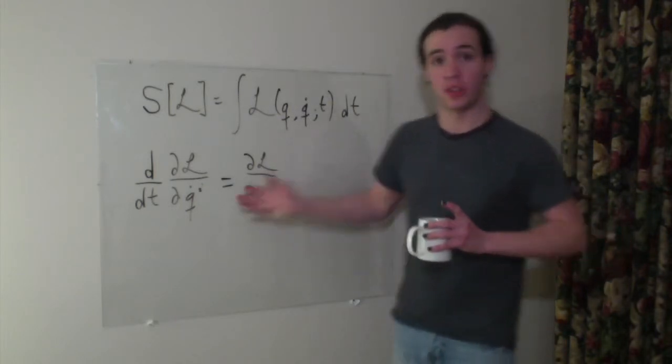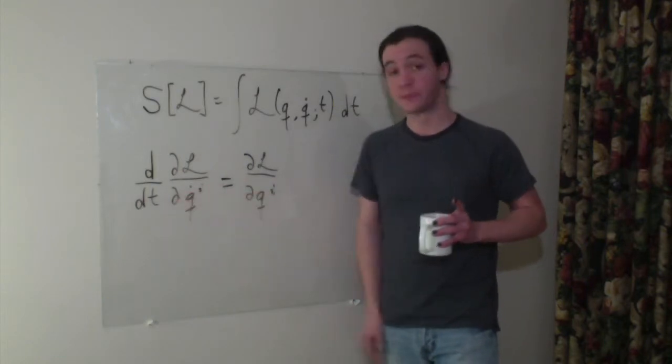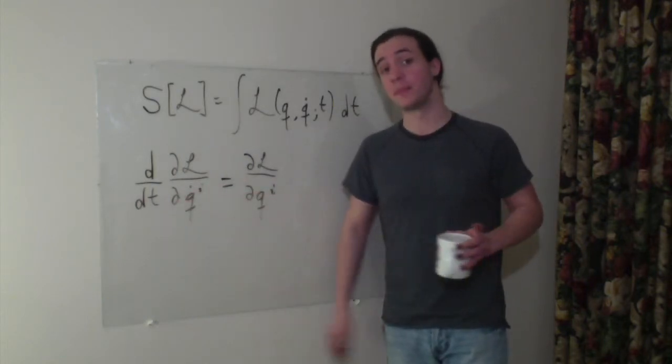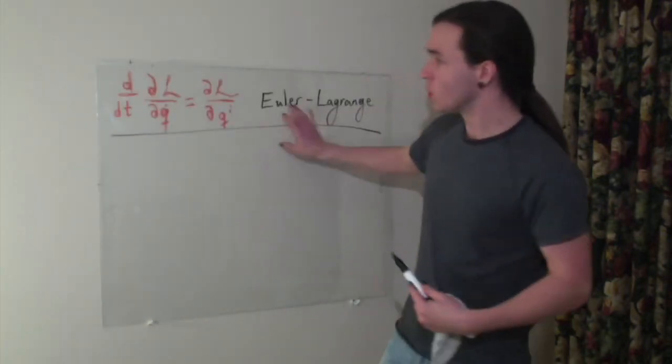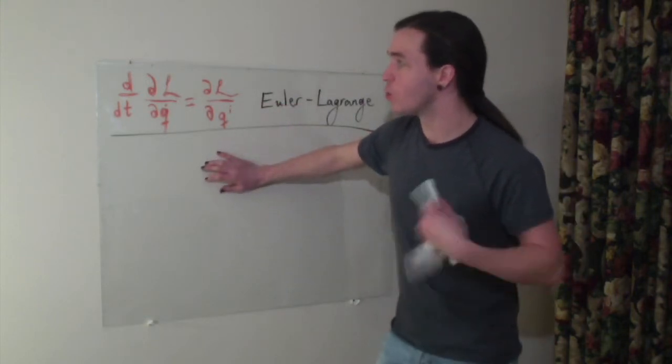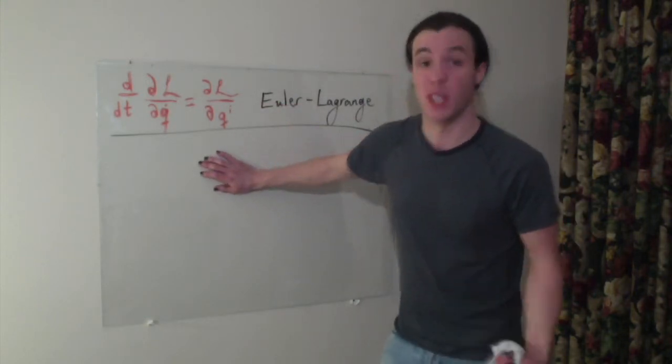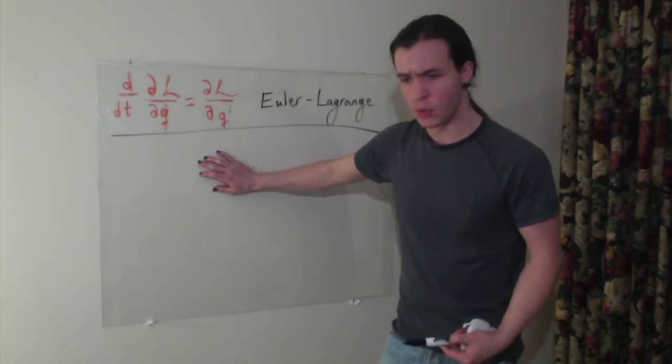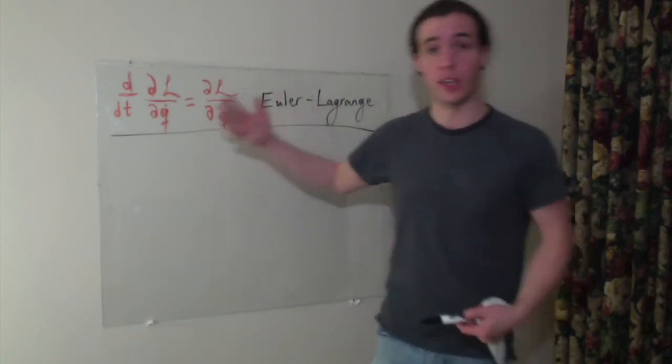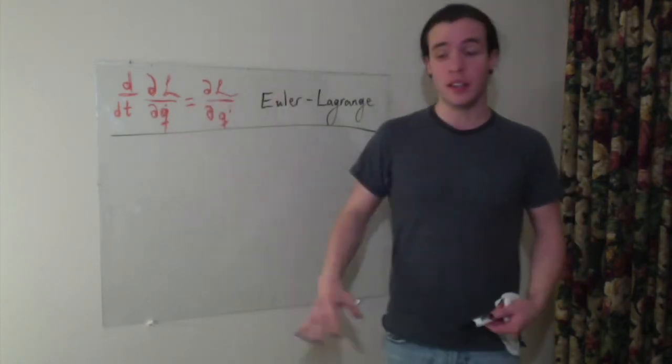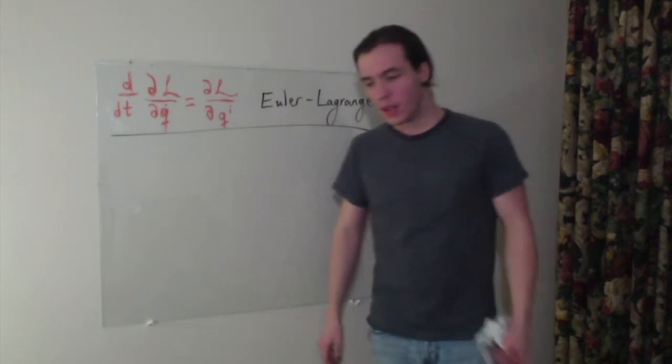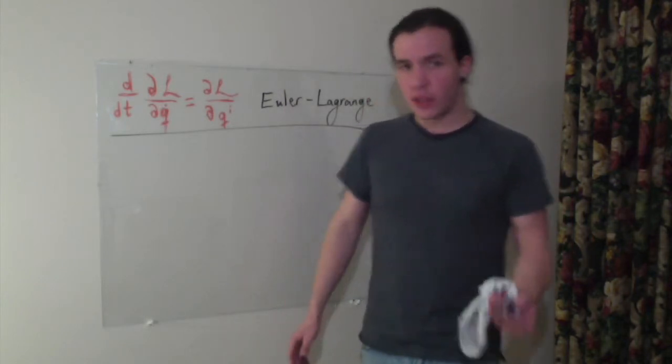This will give you the equations of motion for the system if you know your Lagrangian. And you just take these partial derivatives and this full derivative, and then you have what you need. Now, with this Euler-Lagrange equation, you can actually derive what you would have done through just regular force laws. So if you've done this correctly and you defined the correct Lagrangian, you can end up getting the correct force law in the end. The problem, though, is I haven't told you what the Lagrangian is.